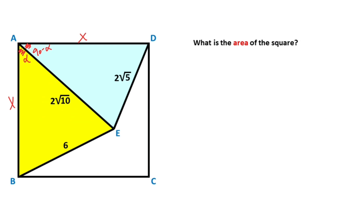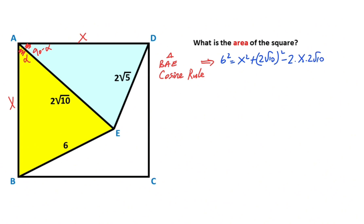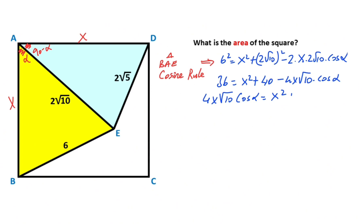After that, for this triangle, if we apply the cosine rule: 6² = x² + (2√10)² − 2·x·2√10·cos α. So 36 = x² + 40 − 4x√10·cos α, which gives 4x√10·cos α = x² + 4. That means cos α = (x² + 4) / (4x√10).